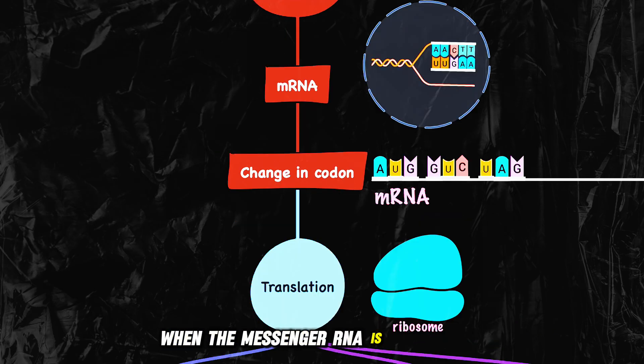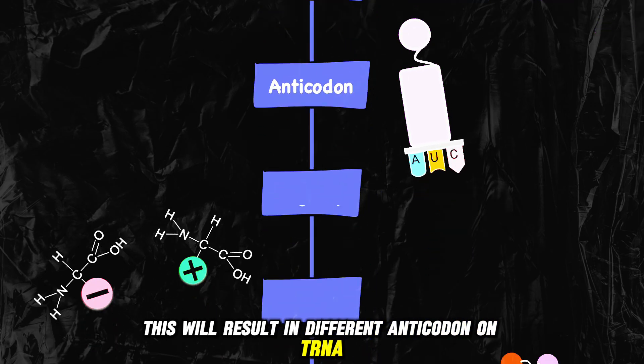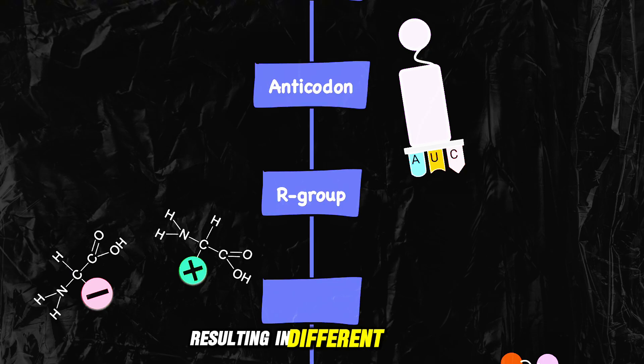When the messenger RNA is translated, this will result in different anticodons on tRNA, resulting in different R groups in the polypeptide chain.